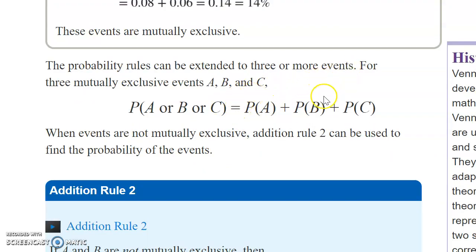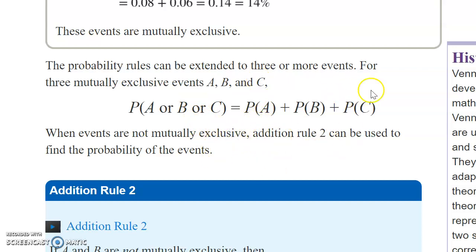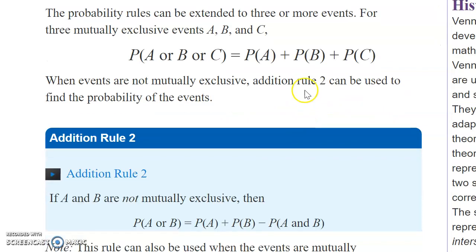The probability rules can be extended to three or more events. There's no reason we can't have three or more — the rule is exactly the same. If they're mutually exclusive or disjoint, you just add up the probabilities.